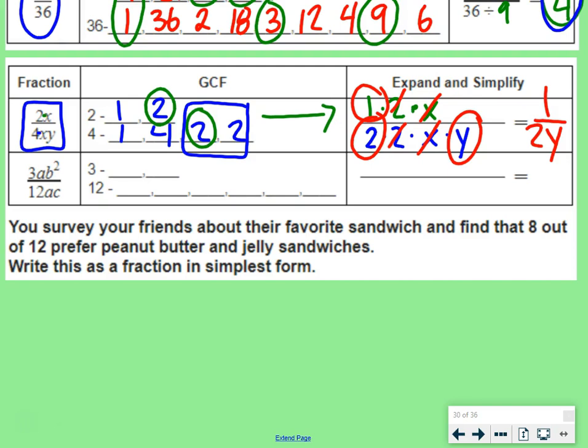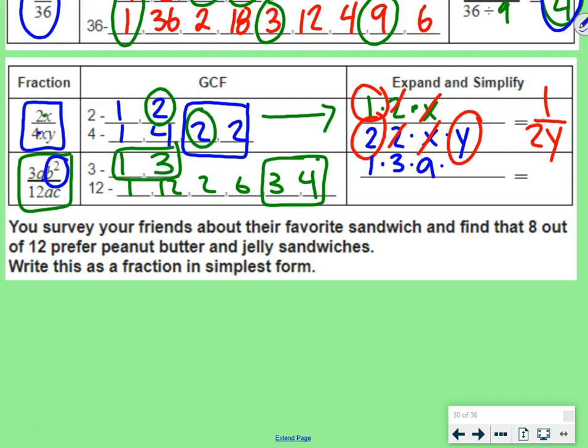So let's try the second one together. 3ab squared over 12ac. So let's start by finding the greatest common factor of 3 and 12. So 3 is 1 times 3. 12, we have 1 times 12, 2 times 6, and 3 times 4. So we're going to use the 1 and the 3, and the 3 and the 4, because then they have the same number. We want the factors that have the same number, one of the same number. So we can write 3 as 1 times 3. 3, then we have an a, so we're going to write times a, times b squared. Now if you remember our exponents lesson, that means we have 2 b's multiplied together. So it means b times b.